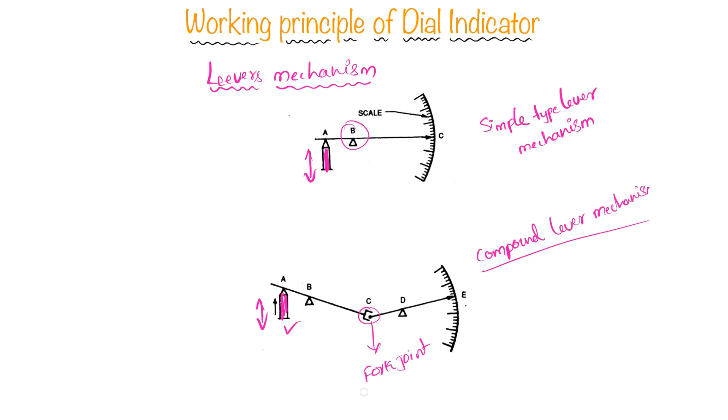Whenever there is a linear movement in this plunger, this needle will move on this dial accordingly. This is how the compound lever mechanism works. This is all about levers mechanism and if you have any thoughts, please comment them below.